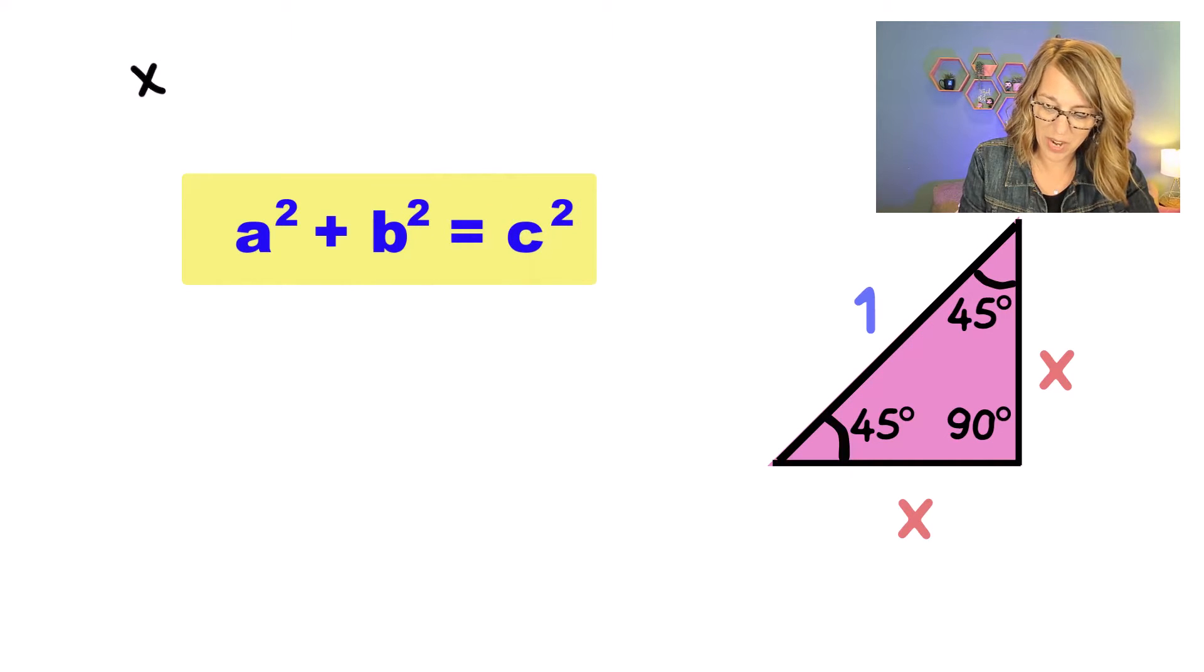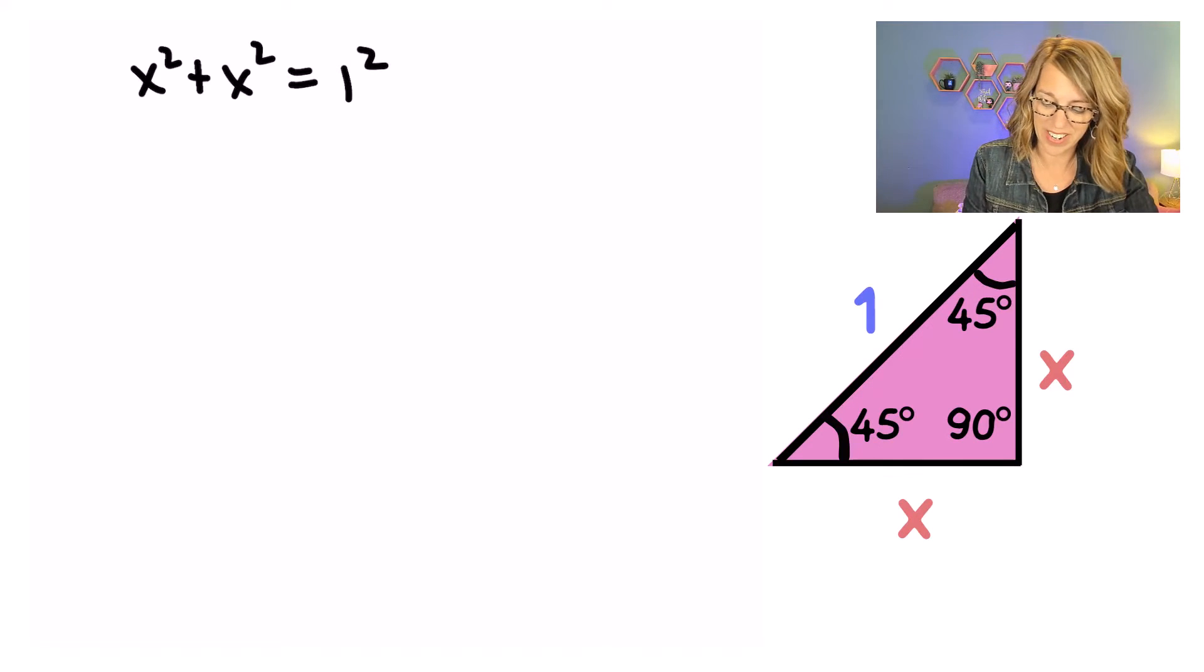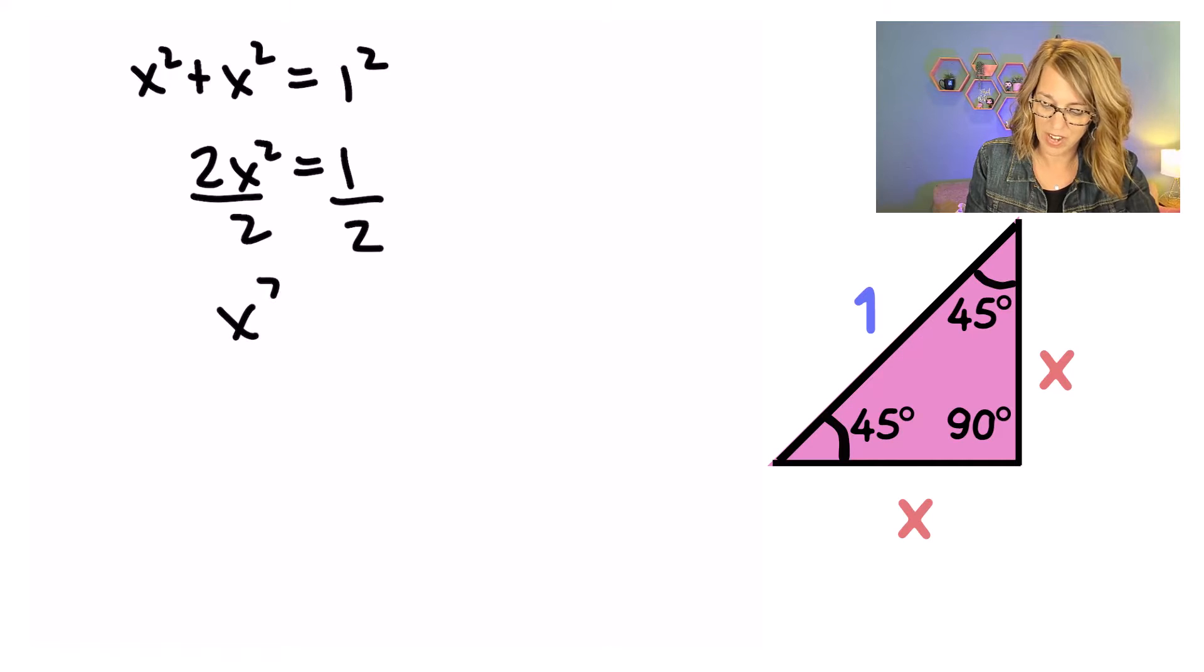We've got X squared plus X squared is equal to 1 squared, which is just 1. That's going to give me 2X squared is equal to 1. Let's divide both sides by 2, and X squared is equal to 1 half.